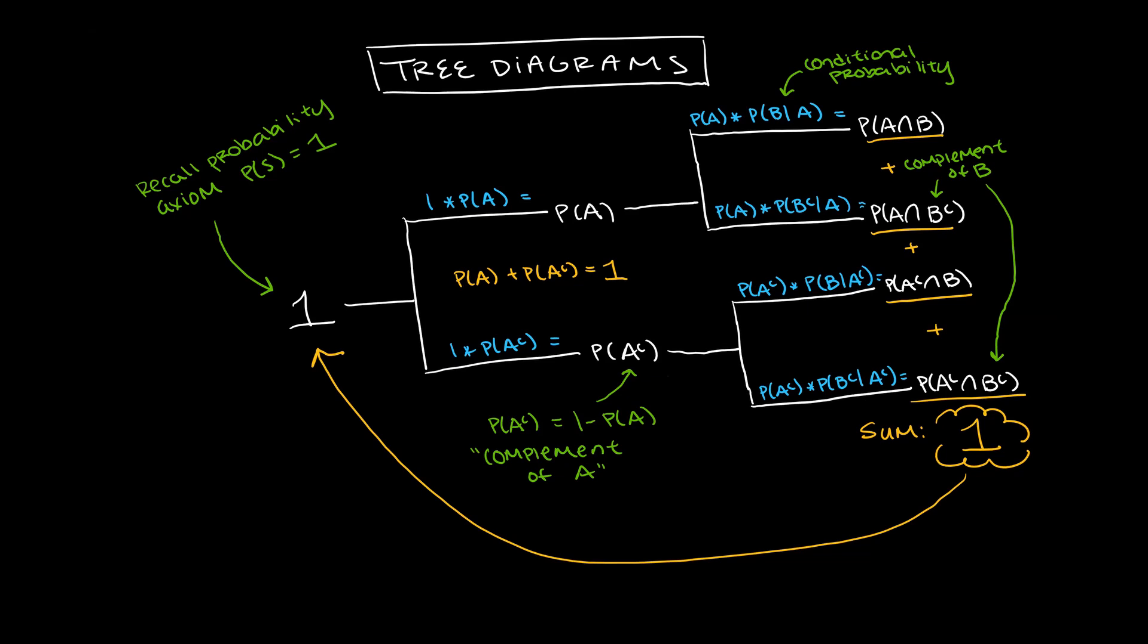We can see how multiplication along the branches works by rearranging the formula for conditional probability.